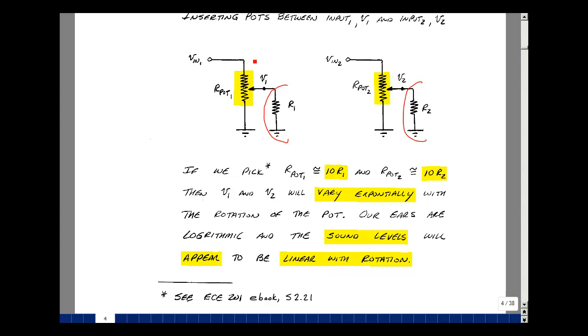Our hearing is logarithmic, so the sound levels will appear to be linear as we rotate the pot. If you had full volume with the pot up here, then dropped it to half the position, it would sound half as loud. That's because your ear is hearing the power levels, not the voltage. This was discussed in ECE 201 in supplemental problem 2.21.